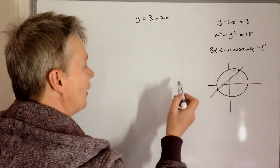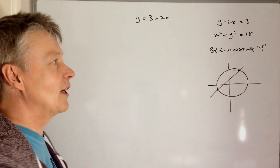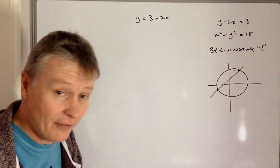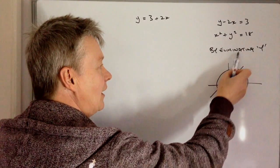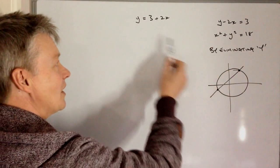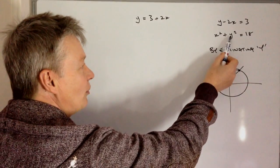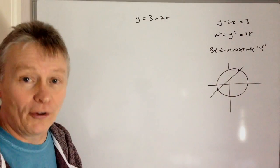Okay, in this one I've got x squared plus y squared equals 18. Now the specific instruction we've been given is by eliminating y. So in other words, I have to take this and put it into this y part of the equation.